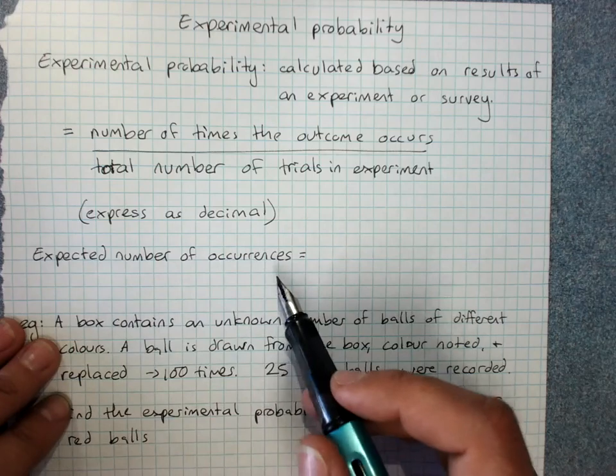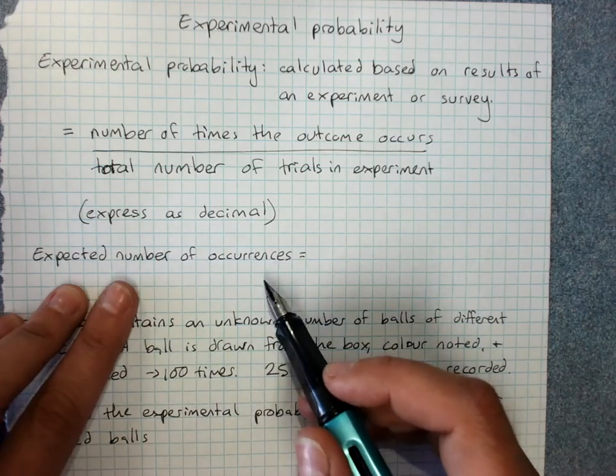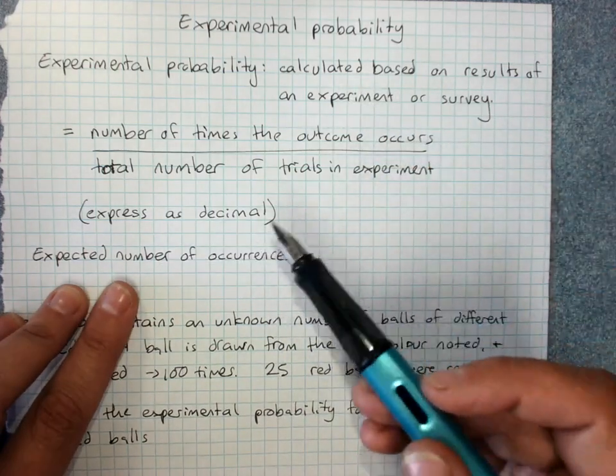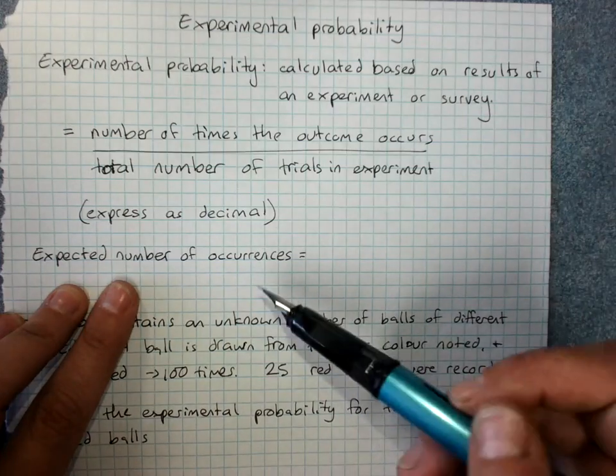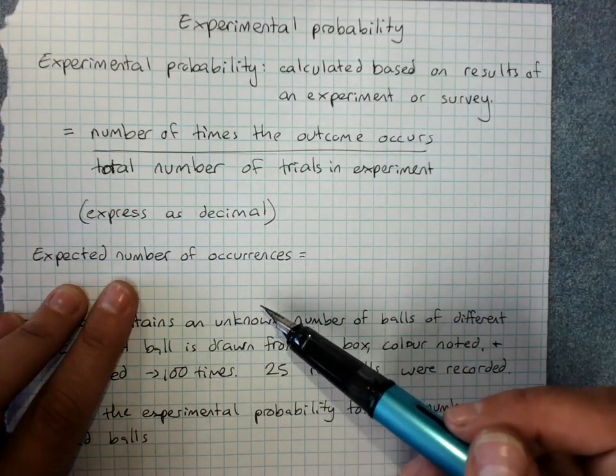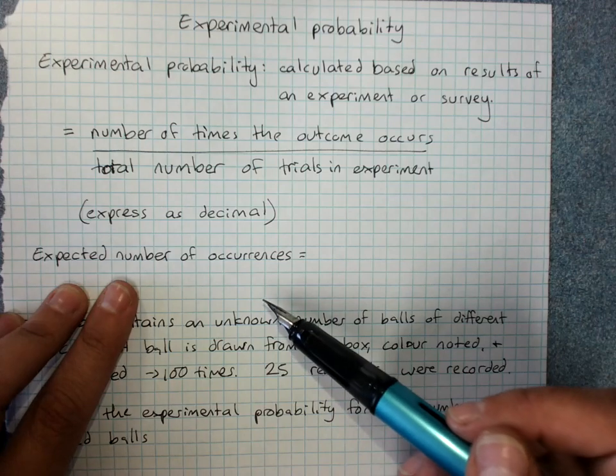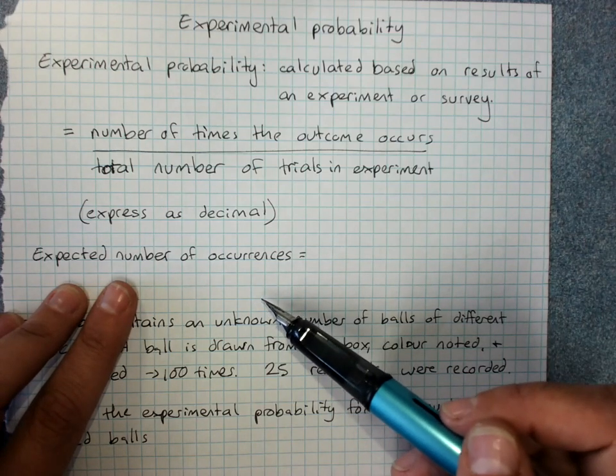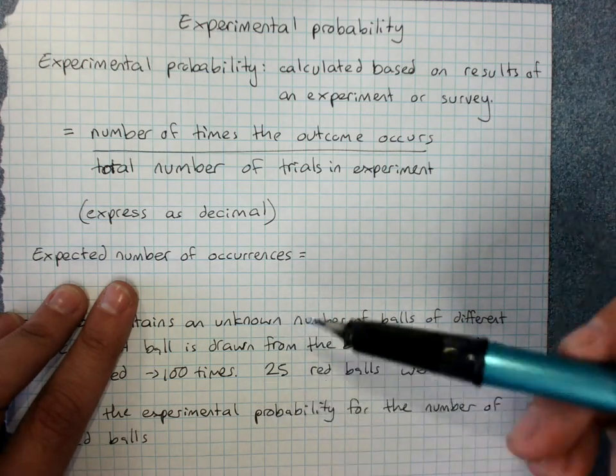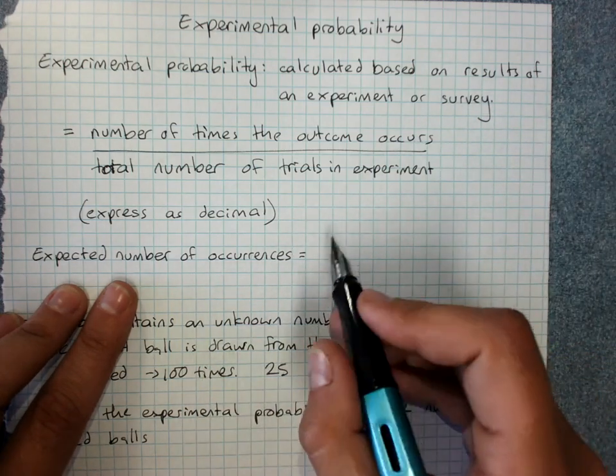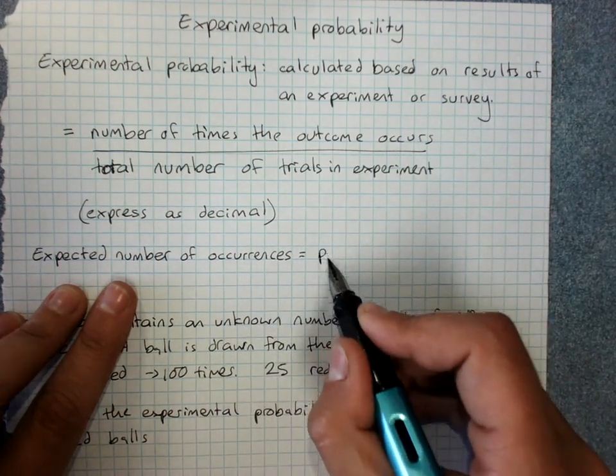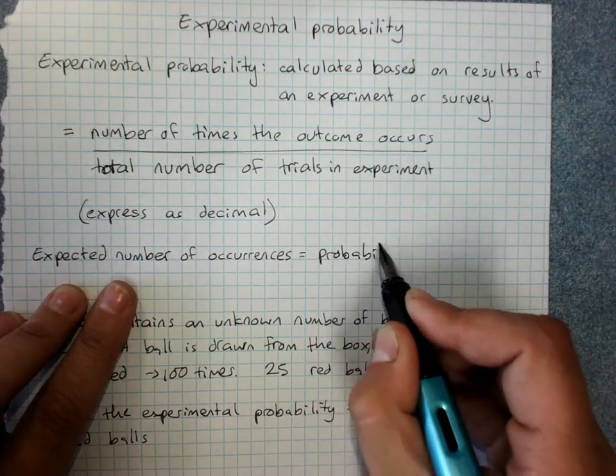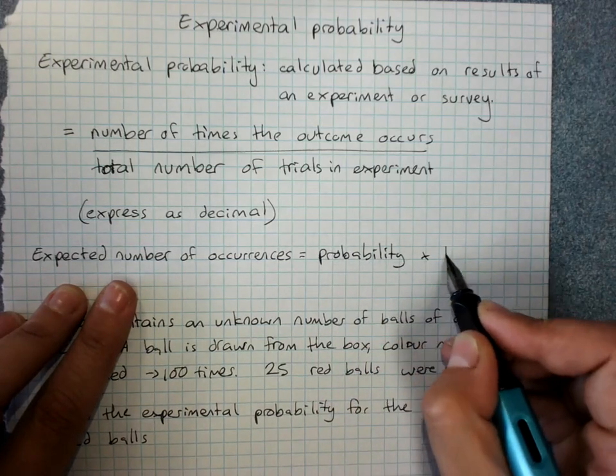The expected number of occurrences: If you have theoretical or experimental probability, then if you know how many trials you're going to do, you can predict how many will be of a particular outcome by doing the probability times the number of trials.